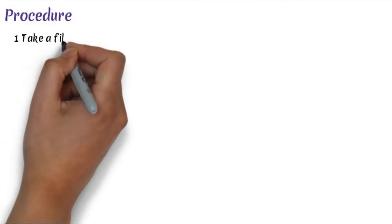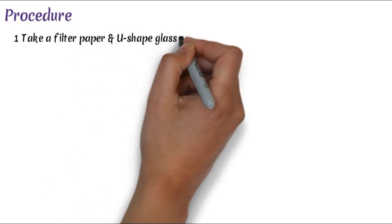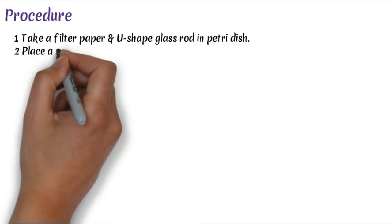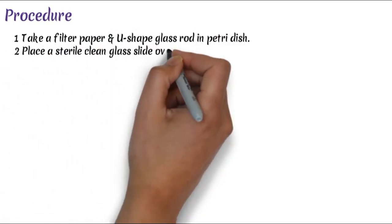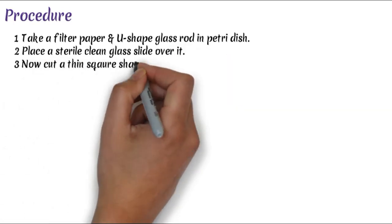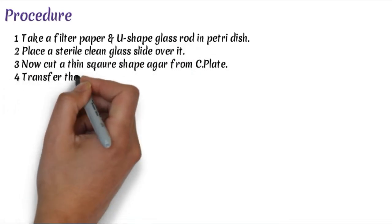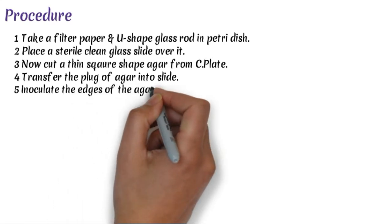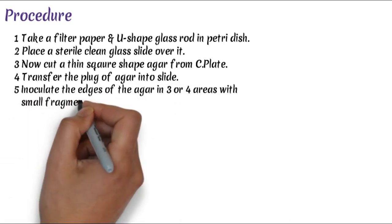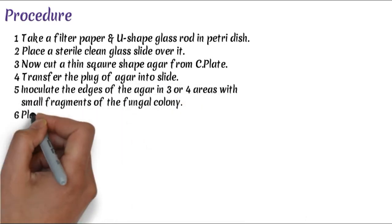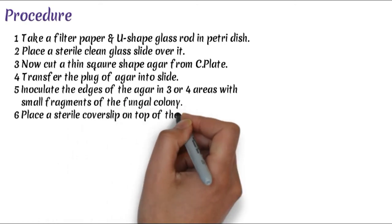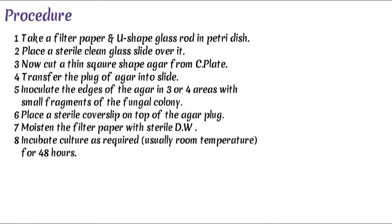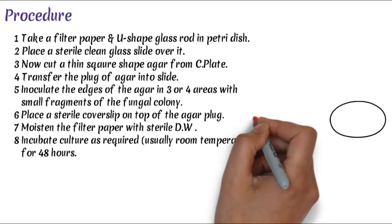Procedure: Take a filter paper and U-shaped glass rod holding a Petri dish. Place a clean glass slide over it. Cut a thin square piece of agar from a culture plate and transfer the plug of agar onto the slide. Inoculate the edges of the agar on 3 to 4 sides with a small fragment of fungal colony. Place a cover slip on the plug of agar. Moisten the filter paper with sterile distilled water. Incubate at room temperature for 48 hours. Perform the whole procedure aseptically.